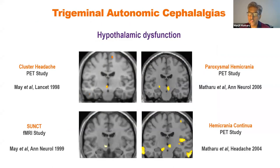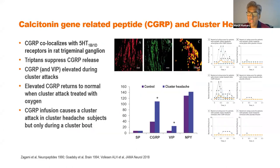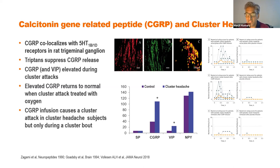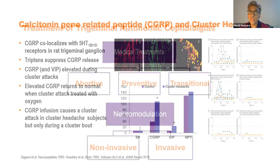Pathophysiologically, hypothalamic dysfunction appears to be a signature feature across all these disorders. An important biochemical signature is elevation of CGRP and VIP during cluster attacks. CGRP levels normalize after the cluster attack is treated with oxygen. The next speaker will discuss what happens when CGRP infusions are given to cluster headache patients.